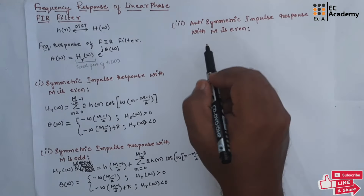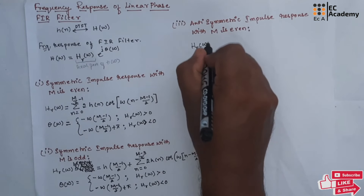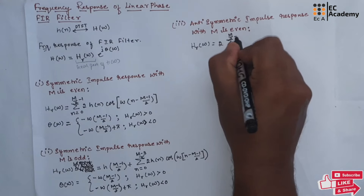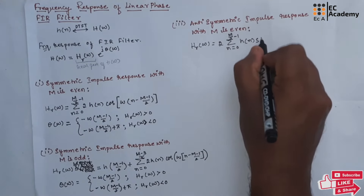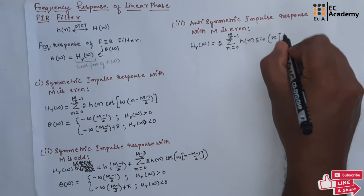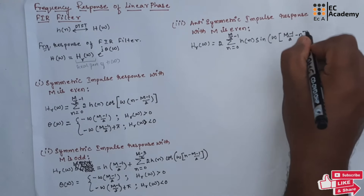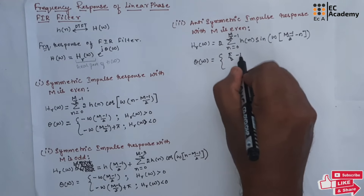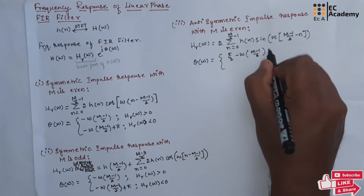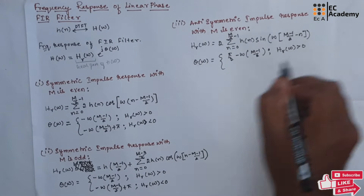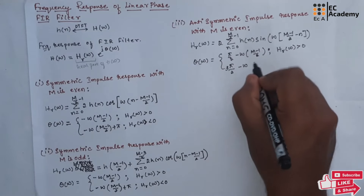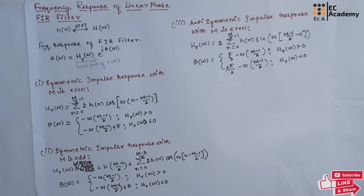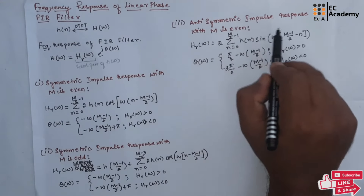For Case 3, anti-symmetric impulse response with M even, Hr of omega equals 2 times the summation from n equals 0 to M/2 minus 1 of H of n times sin(omega times ((M minus 1)/2 minus n)). The phase response theta of omega equals pi/2 minus omega times (M minus 1)/2 for Hr of omega greater than 0, and 3pi/2 minus omega times (M minus 1)/2 for Hr of omega less than 0.